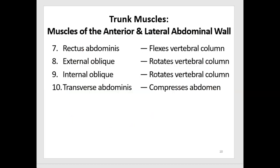Now let's look at the trunk muscles. There are four muscles that make up part of the abdominal wall, and three of those are also located a little bit posteriorly. These include the rectus abdominis, the external oblique, the internal oblique, and the transverse abdominis. All of these can help compress the abdomen when they contract, but each has unique features that make them different from one another.